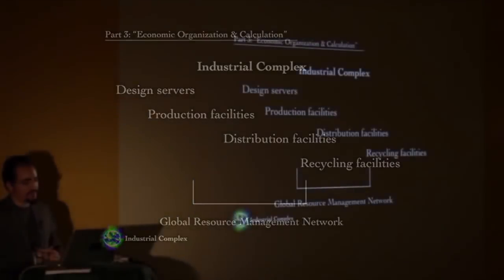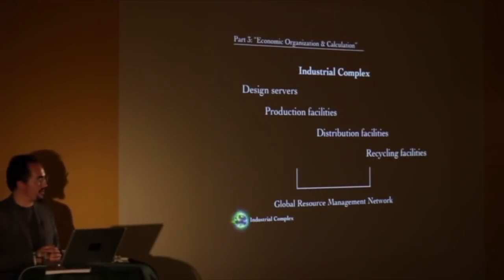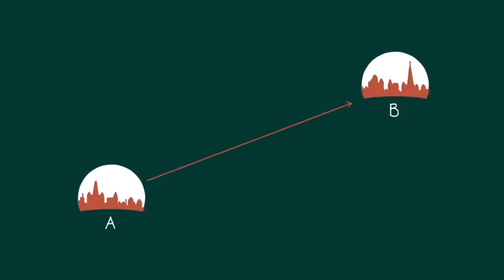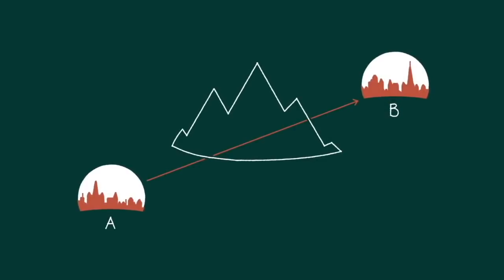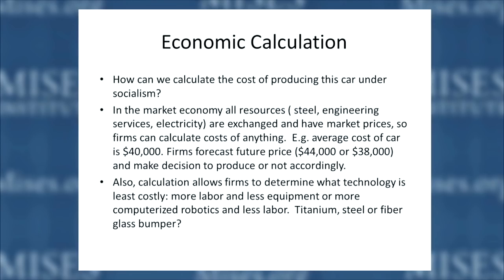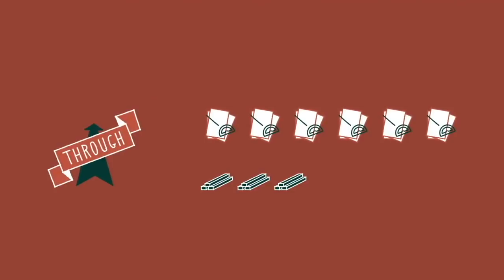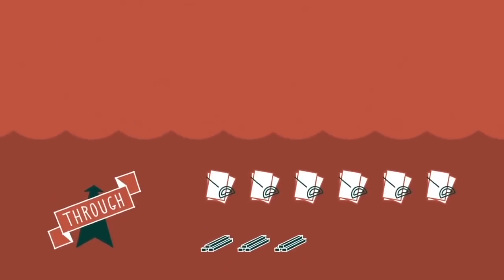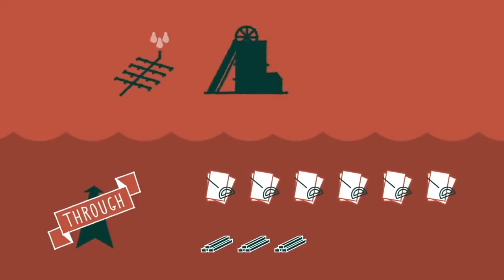Moving on to the industrial complex layout — this means the network of facilities directly connected to the design and database system described: servers, production, distribution, recycling. We also need to relate the current state of resources per the global resource management network — it doesn't control people, it's just an information gathering system. You want a railroad from city A to city B, but between the cities is a mountain range. If you build through the mountains, you'll use much less steel for the tracks because that route is shorter — but you'll use a great deal of engineering to design the trestles and tunnels. So they never know whether they're producing things with more value than other things that could have been produced, or whether they're just wasting resources.